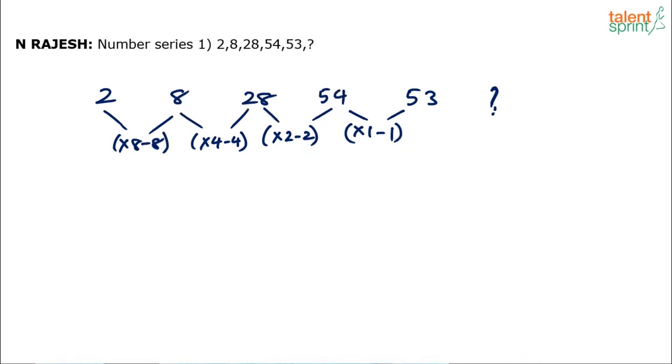Into eight minus eight, into four minus four, into two minus two, into one minus one. Two into eight: 16 minus eight is eight. Eight into four: thirty two minus four is twenty eight. Twenty eight into two: fifty six minus two is fifty four. Fifty four into one is fifty four minus one is fifty three.